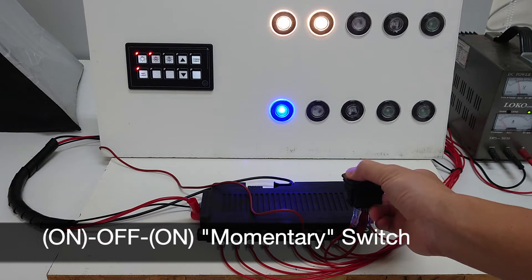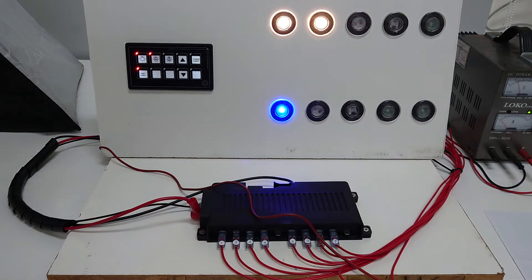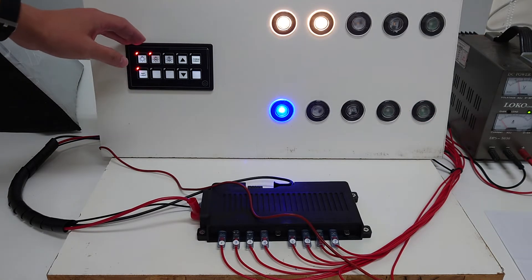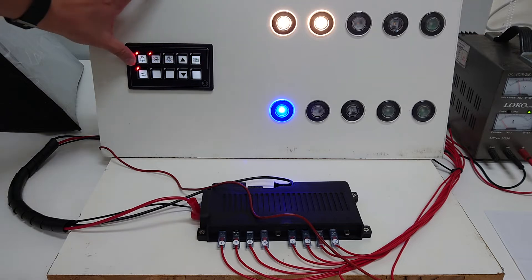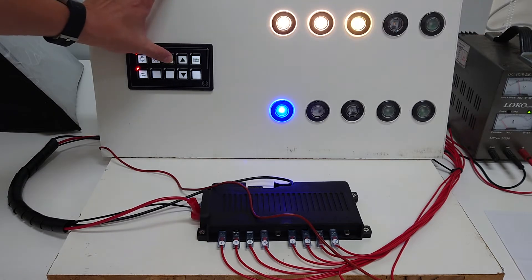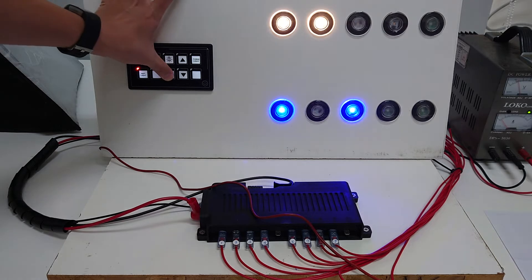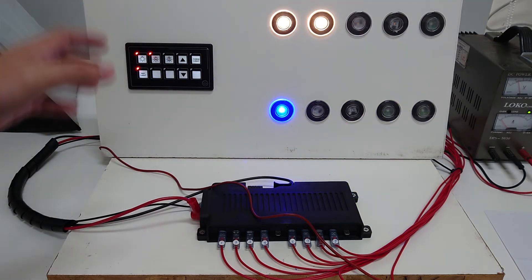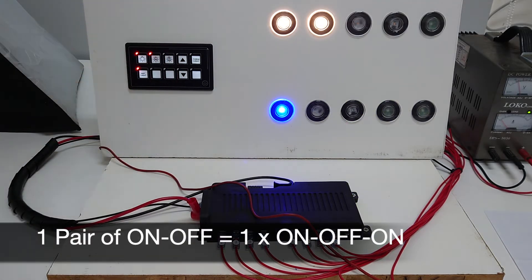What we have for the membrane touch panel is ten or six pairs of on-off switches. All you need is to use a pair of on-off switches to make it on-off-on switches.